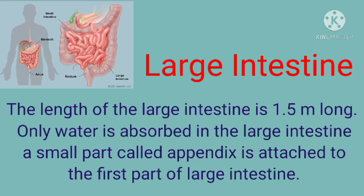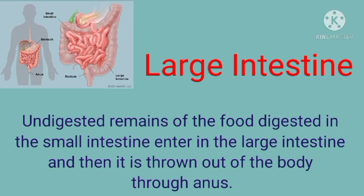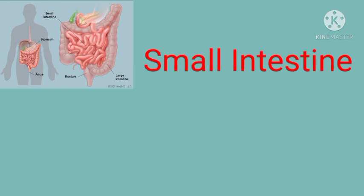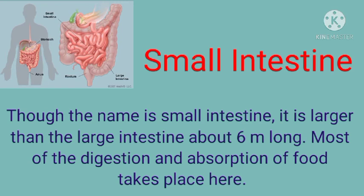The large intestine is 1.5 meters long, and absorption of water takes place only in the large intestine. The appendix is attached to the first part of the large intestine. Undigested remains of food from the small intestine come to the large intestine and are then expelled from the body through the anus.